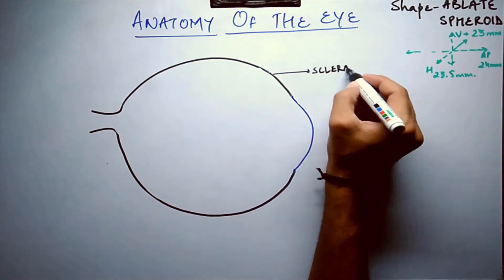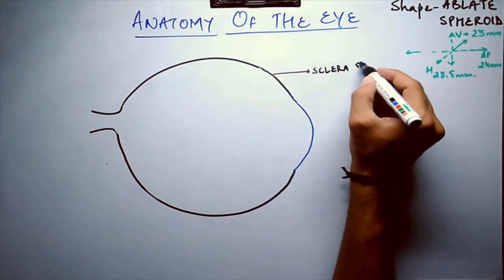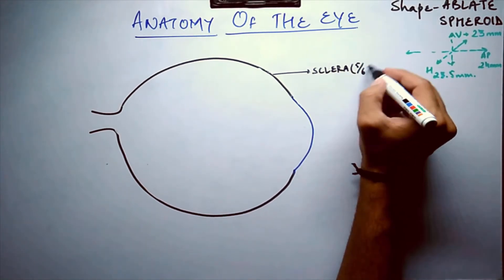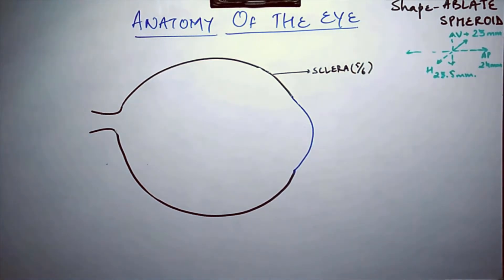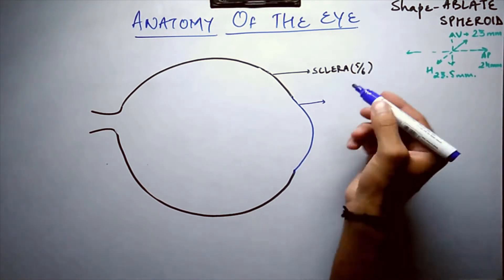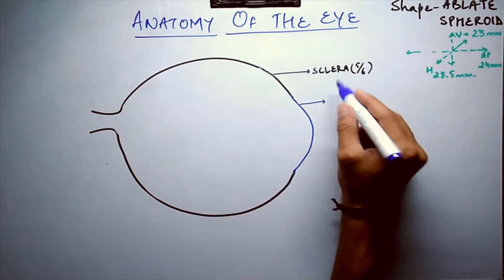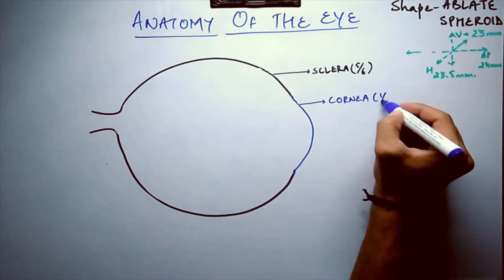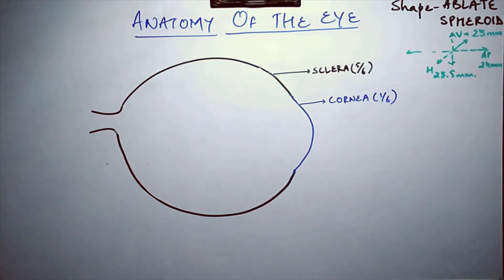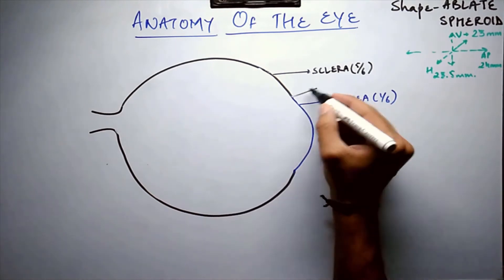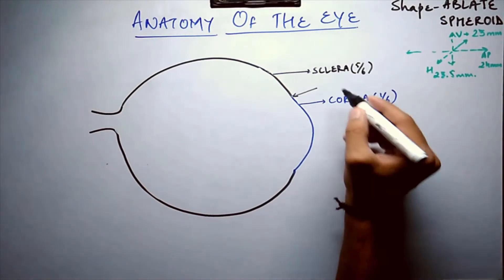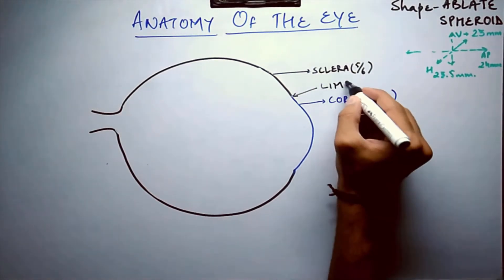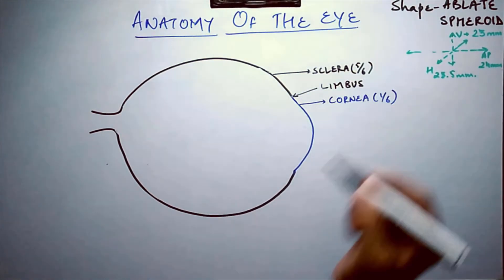The outermost layer of the eye is the fibrous coat, of which the major part is the sclera, forming five-sixths of the fibrous coat, and the anteriormost part is the cornea, which forms one-sixth of the fibrous coat. The junction where the sclera and cornea meet is called the limbus.